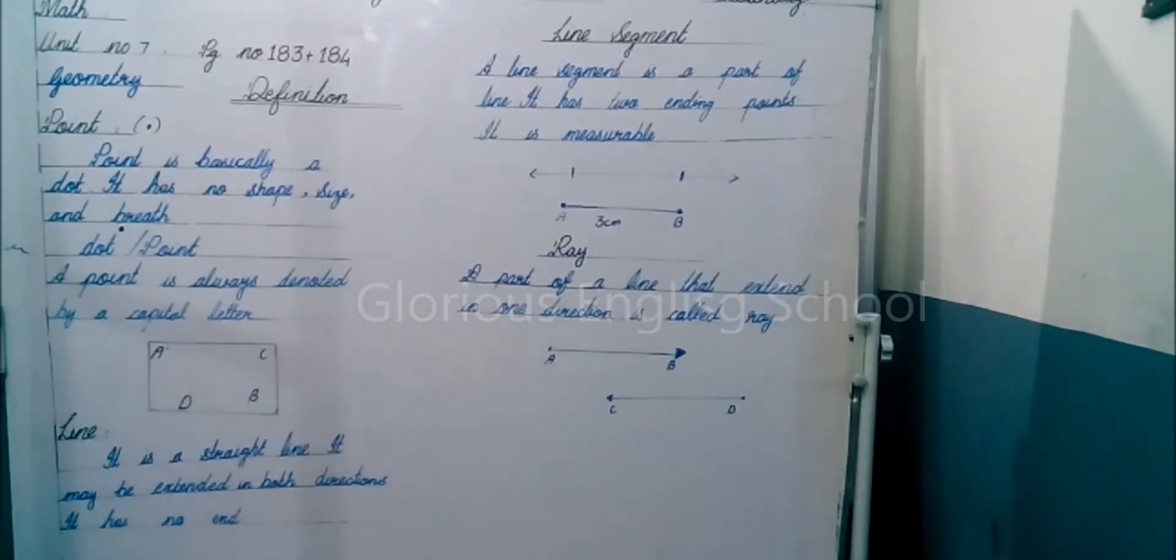Students, we will start the next lesson. Today the date is 16th May and the day is Saturday. We will do Math Unit Number 7, the name is Geometry, page number 183 and 194. We will start with the definitions.